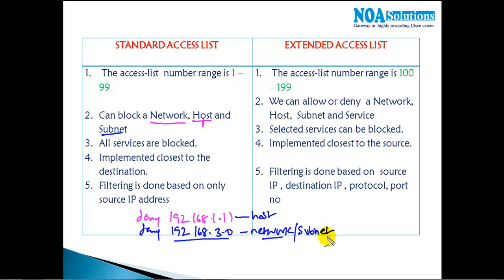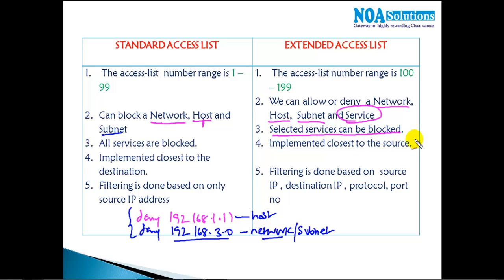Subnets are the small networks we get after subnetting. In an extended ACL, we have the same features — allow or deny specific hosts, subnets, or networks — but there is one extra thing: we can allow or deny specific services. Selected services can be allowed, denied, blocked, or permitted.